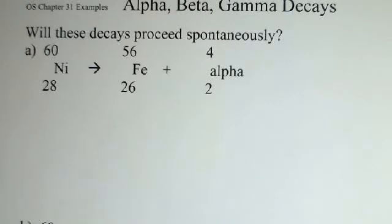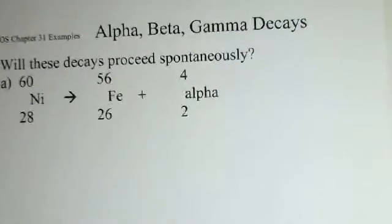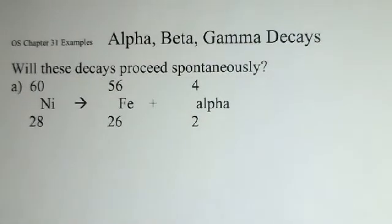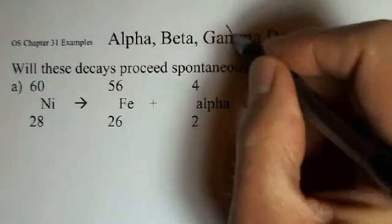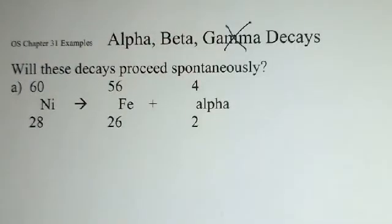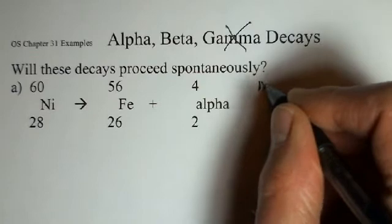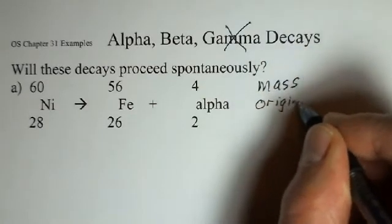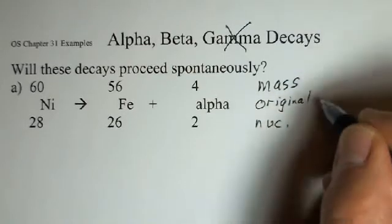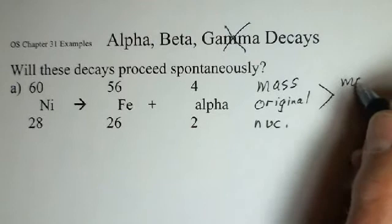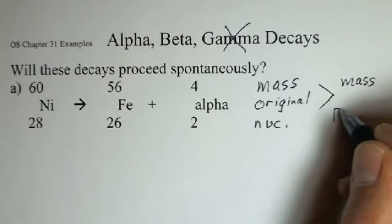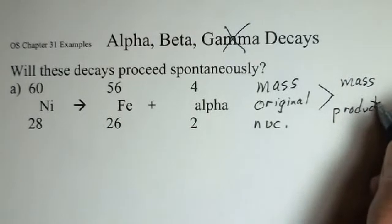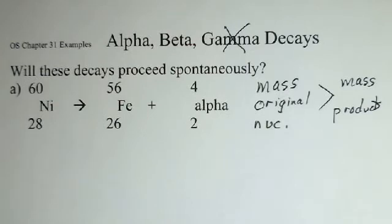Time for us to investigate the alpha and beta decays. We actually will not do gamma decays in this particular example. Our question is, will a particular decay proceed spontaneously? Our method of deciding this will be mass. If the mass of the original nucleus is greater than the mass of the products, then the decay can be spontaneous.